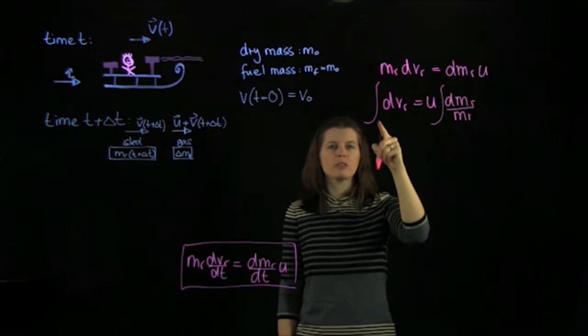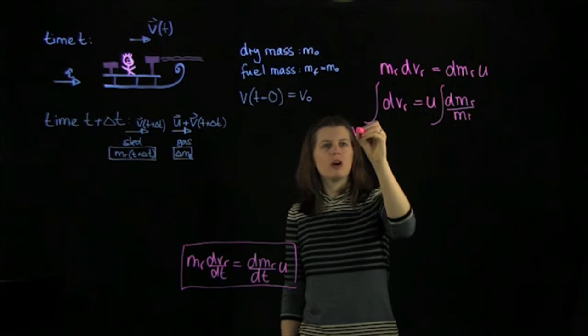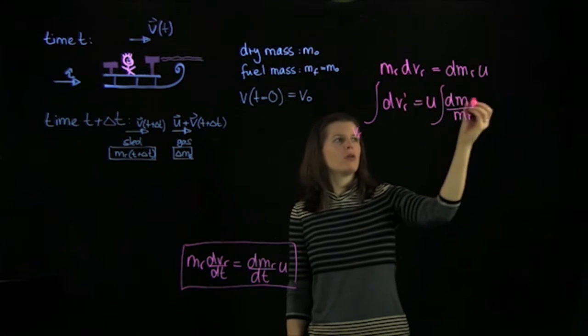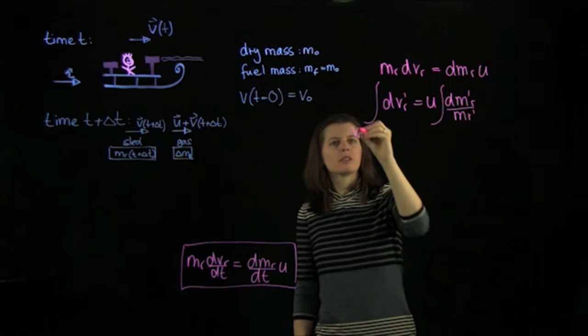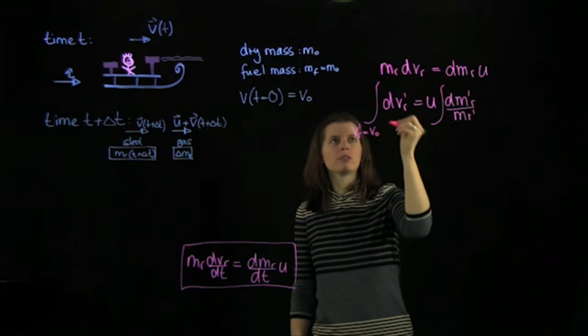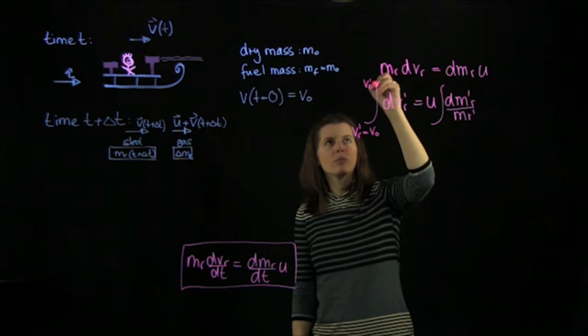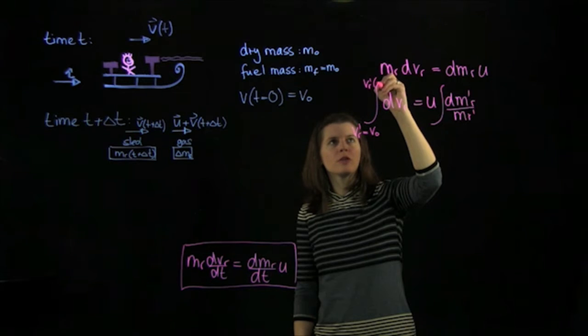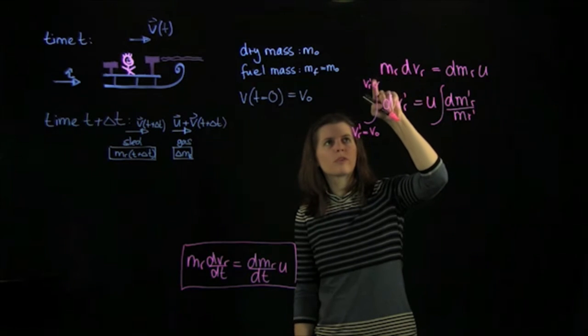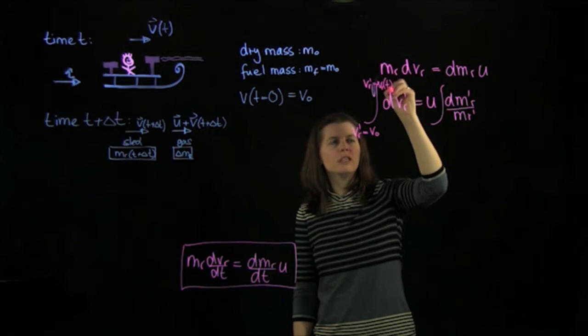And we can do that. And the tricky bit is that we need to take care of the integration limits here. We have vr. And actually, these now are all primes. So we have vr going from v0, that is our initial condition here, to vr prime equal vr of t.